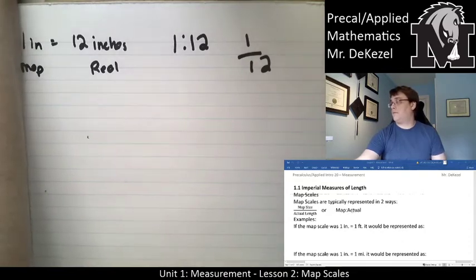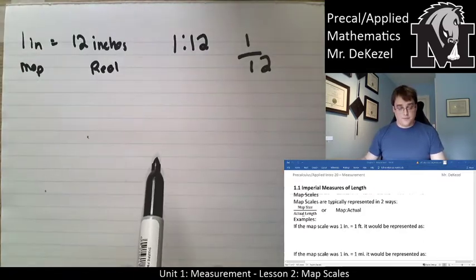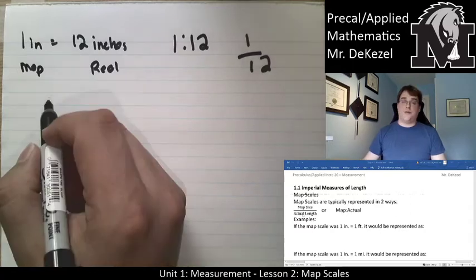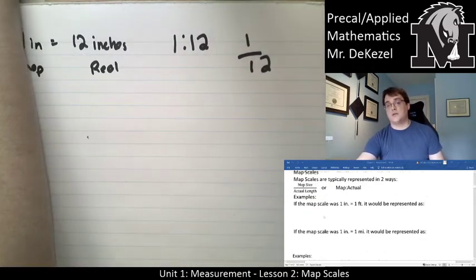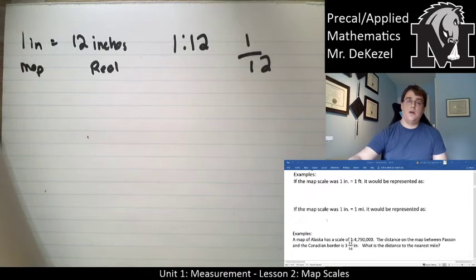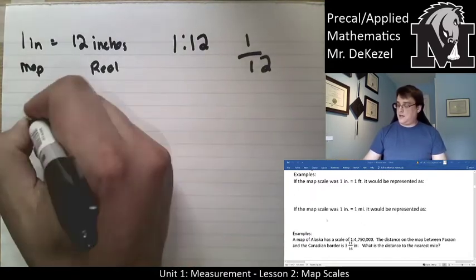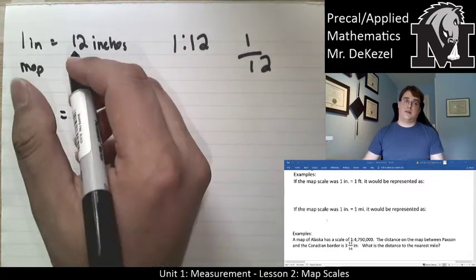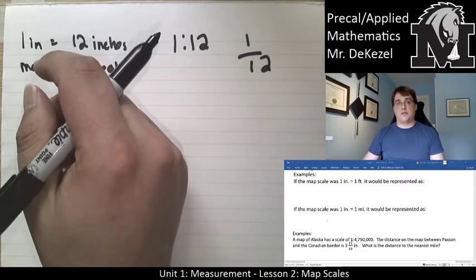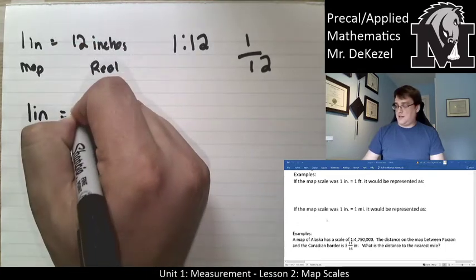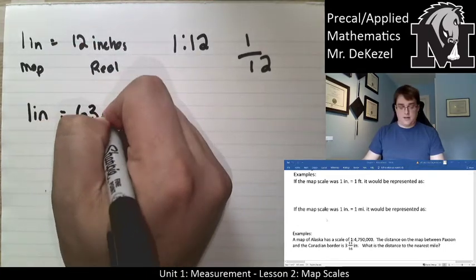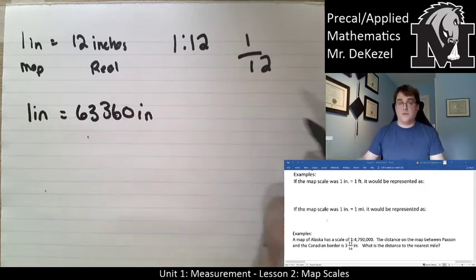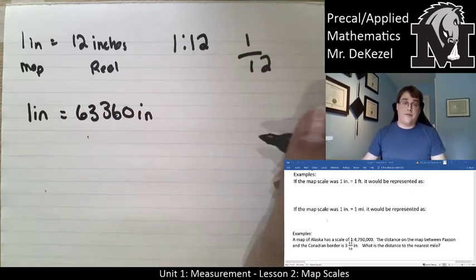The second one would be the map size over the actual like a fraction. So if the map scale was 1 inch equals 1 mile, we would represent it as 1 inch is equal to, we have to convert 1 mile into inches, and you might go back a couple of pages to our previous lesson and see that it is 63,360 inches.